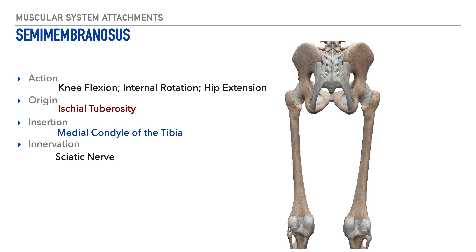The next muscle of the hamstrings is the semimembranosus, which is deep to the semitendinosus. The action produced by this muscle is knee flexion and internal rotation; it also helps to perform hip extension. Its origin is on the ischial tuberosity, its insertion is on the medial condyle of the tibia on the most medial aspect, and its innervation is the sciatic nerve.